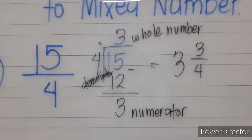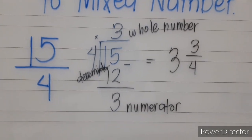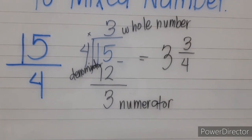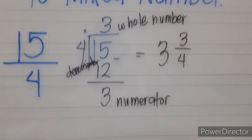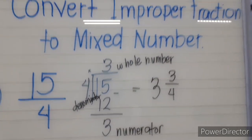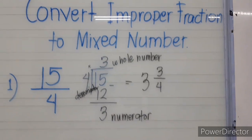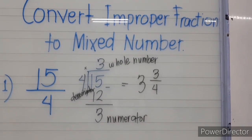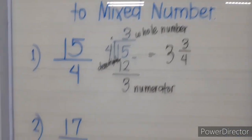So we have 15 fourths is equivalent to 3 and 3 fourths. Let's proceed to the next number.